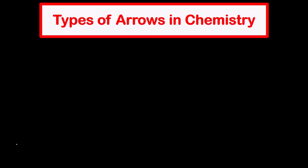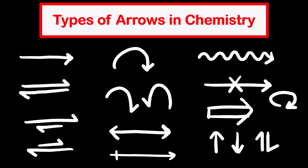Hello everyone, welcome to Chemazon Complete Chemistry. In today's video we are going to learn what are the different types of arrows and their applications in writing organic reaction mechanisms. In this chapter of organic reaction mechanisms, we had seen different definitions of acids and bases, and different types of functional groups in organic chemistry. In this video we will see the role of different types of arrows in organic chemistry as well as some arrows used in inorganic chemistry.